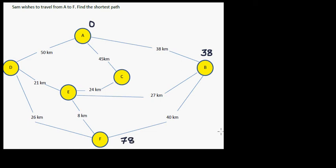Now we can think, can we make this better? What if he goes from A to D? From A to D, the distance is 50, and from D to F, it is 50 plus 26 is 76. So this is a better path. Let's cross that out. So this is 76.